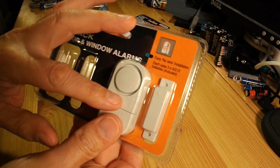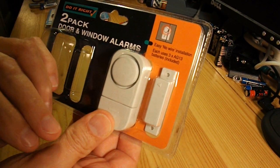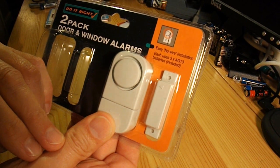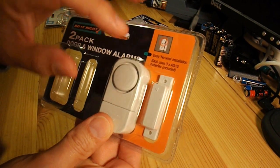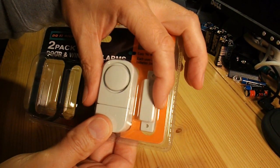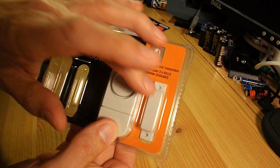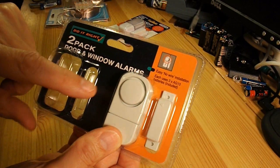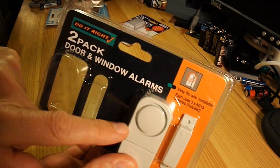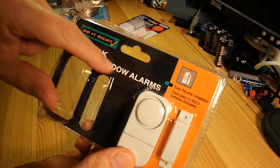This one I haven't taken apart before, but I assume it's working on the same principle. Again, when the magnet's close by, the circuit is open. When the magnet moves away, the circuit's closed, and in this case, an alarm goes off. It's a door and window alarm.